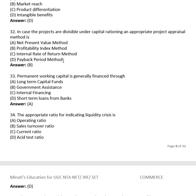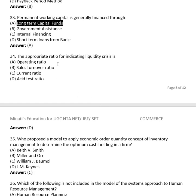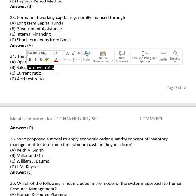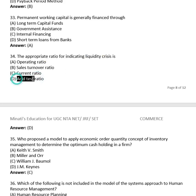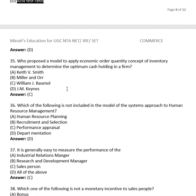Question 31: Permanent working capital is generally financed through: (A) long-term capital funds, (B) government assistance, (C) internal financing, (D) short-term loans from banks. The right answer is (A), long-term capital funds. Question 32: The appropriate ratio for indicating liquidity crisis is the acid test ratio.